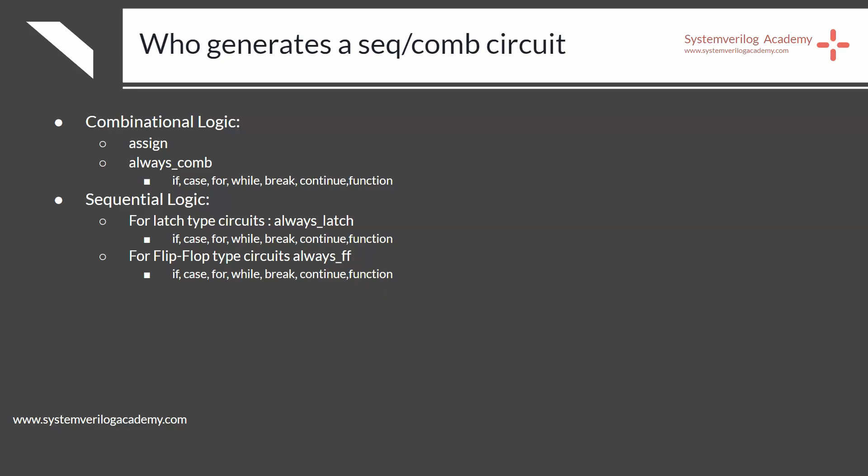If you are writing SystemVerilog RTL design code, you should not use a simple always block. Always specify whether it is combinational using always_comb, latch logic using always_latch, or a flip-flop using always_ff. In testbench coding, the general-purpose always block is used along with other procedural blocks like initial, final, and forever. The initial block executes only at the start of simulation, the final block executes when simulation ends, and the forever block executes continuously like an infinite loop.